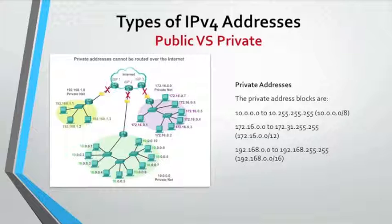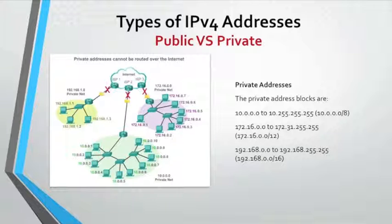Hosts in different networks may use the same private address space. Packets using these addresses as the source or destination should not appear on the public internet. The router or firewall at the perimeter of these private networks must block or translate these addresses. Even if these packets were to make their way to the internet, the router would not have routes to forward them to the appropriate private network. The vast majority of IPv4 unicast host addresses are public addresses, designed to be used in hosts that are publicly accessible from the internet.